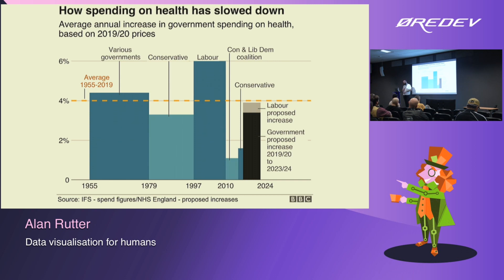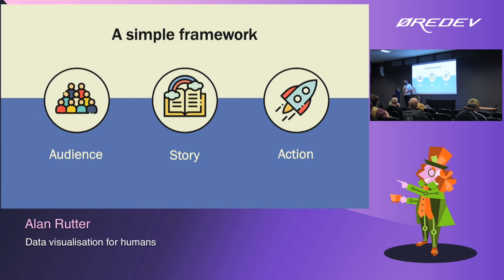What we really need before getting tangled up in design is a starting point to clarify what we're trying to do. I think there are three components you can always define right at the start that will give you the best chance of success: audience, story, action. This isn't really about data — it's boiled-down, very basic communications theory. But unlike when giving a presentation or sending an email, people forget these things when they're presenting data. We're still trying to communicate — that's fundamentally what we're doing when we visualize data.